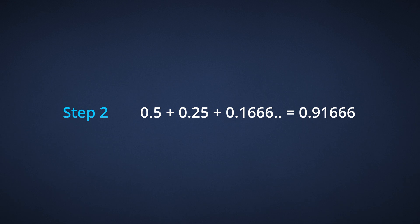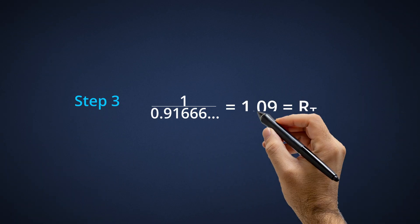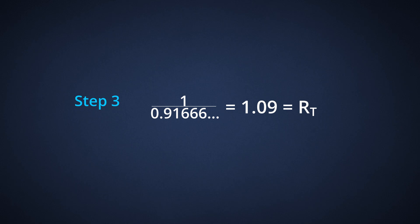Step 2: after you have completed the division, add those answers together. 0.5 plus 0.25 plus 0.1666 equals 0.91666. Step 3: put a 1 over that answer and divide. 1 divided by 0.91666 equals 1.09 as total resistance.